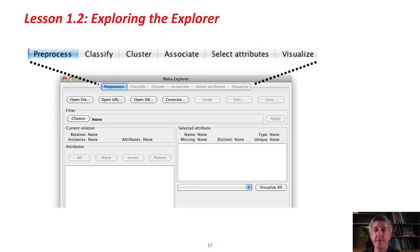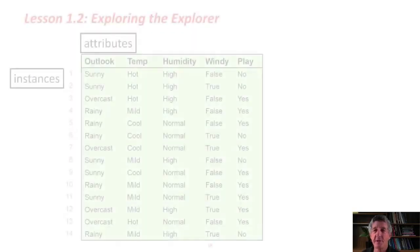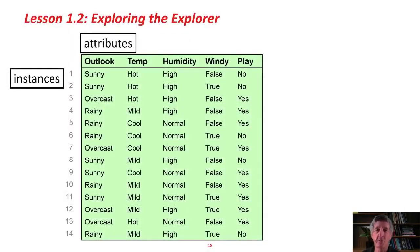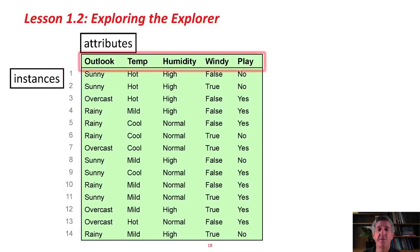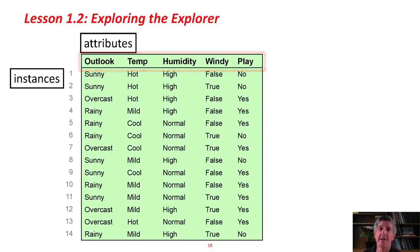I'm going to open a dataset. The dataset I'm going to open is called the WeatherData — a little toy dataset that we'll be seeing a lot of in this course. It's about 14 instances, 14 days. For each of these days we've recorded the values of five attributes: four to do with the weather, and the fifth — play — is whether or not we're going to play a particular unspecified game. What we're going to be doing is predicting the play attribute from the other attributes.